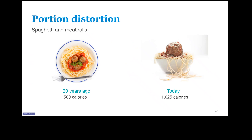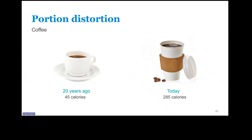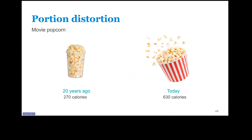With spaghetti and meatballs, there's a calorie difference of 525 between a cup of pasta with sauce and three meatballs today versus 20 years ago, totaling 1,025 calories. This shows how much our plates and bowls have grown over the years. Between a cup of coffee and a large coffee with cream and sugar, there's a 240 calorie difference. With popcorn, there's a 360 calorie difference between 20 years ago and today. Our plate, bowl, and cup sizes really play a role in our portions, since we typically fill them up when we serve ourselves.